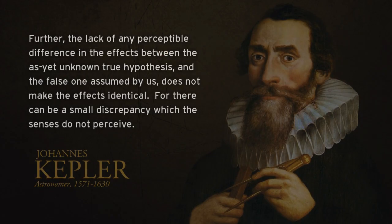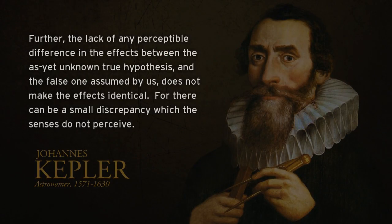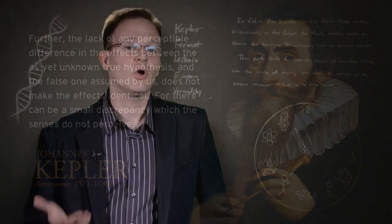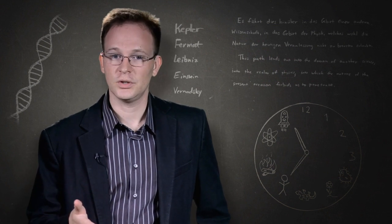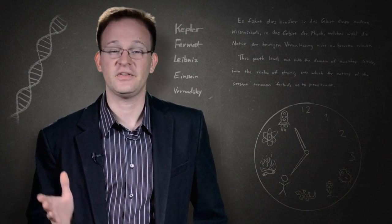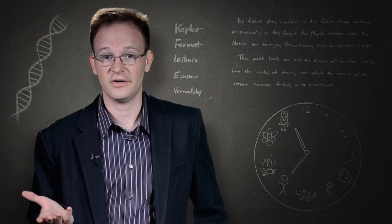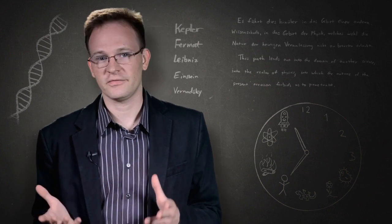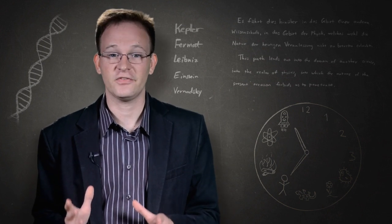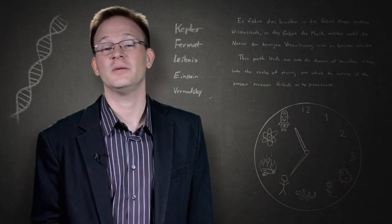He wrote about his own vicarious hypothesis that, further, the lack of any perceptible difference in the effects between the as-yet-unknown-true hypothesis and the false one assumed by us, that does not make the effects identical. For there can be a small discrepancy which the senses do not perceive. There will always be things we haven't measured. Even if our model matches observations perfectly, that doesn't mean it's true. Not just because the observations will get better in the future, but because matching observations, although necessary, is never itself the standard of truth. Although Kepler made a working mathematical model for the planets, he wasn't content without a hypothesis of the purpose lying behind their motions. Why do they move the way that they do?